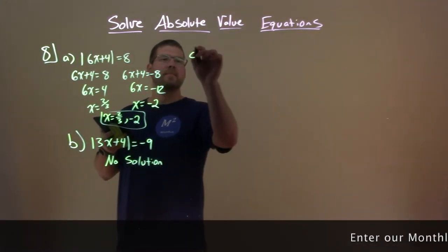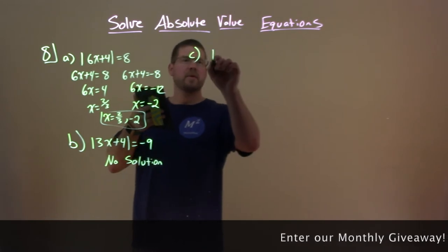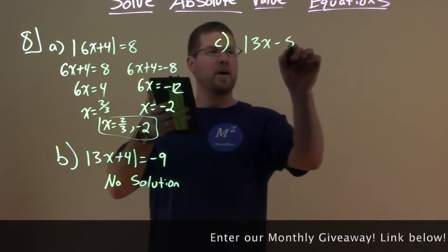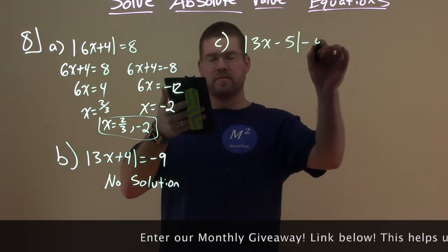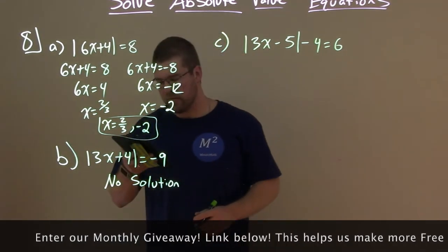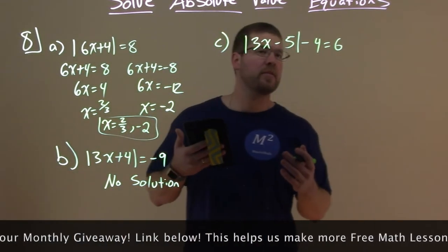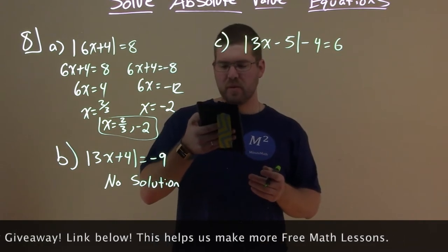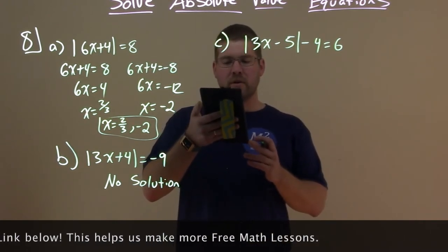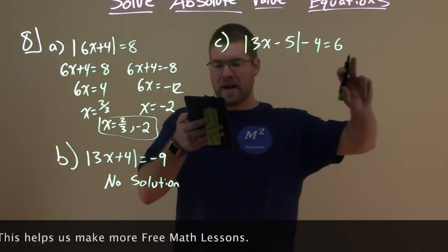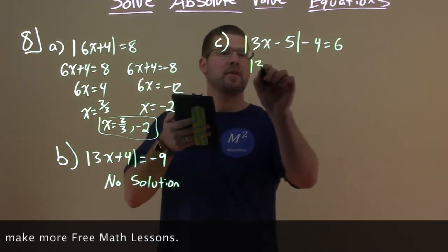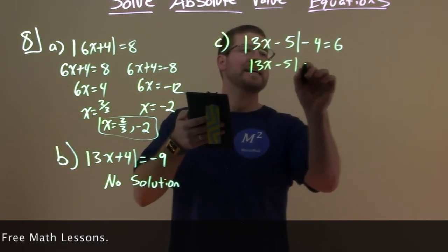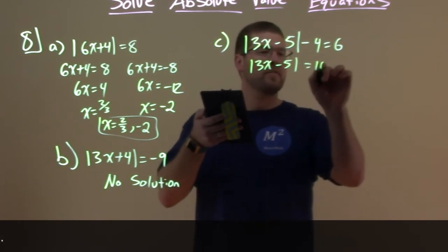Let's go with C. Let's keep this gravy train rolling. We have absolute value of 3x minus 5, minus 4 equals 6. And 3x minus 5 is in the absolute value. All right. Well, what are we going to do? We want to isolate the absolute value. I'm going to add 4 to both sides. So we have the absolute value of 3x minus 5 equals 6 plus 4, which is 10.